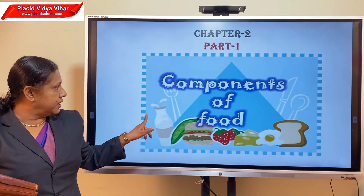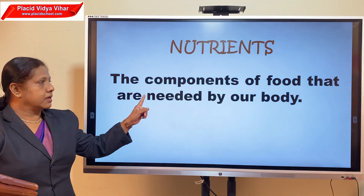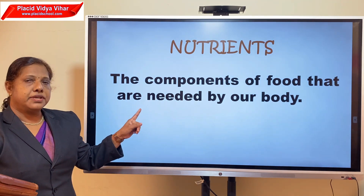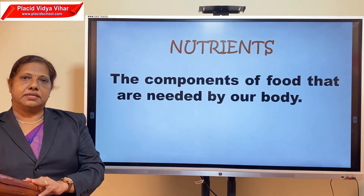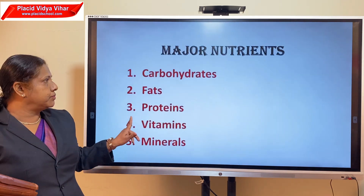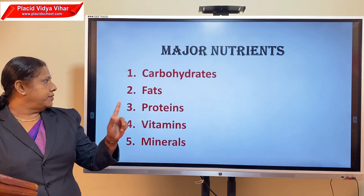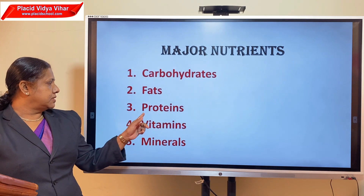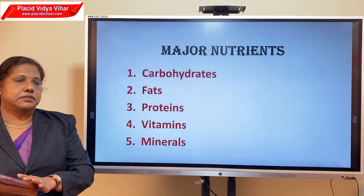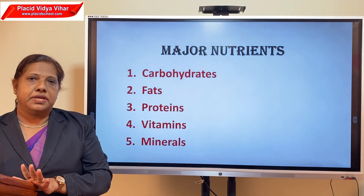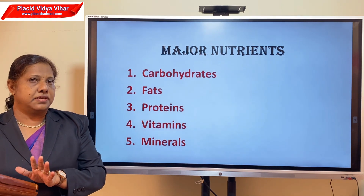So what are nutrients? Nutrients are the components of food that are needed by our body. The five major nutrients in our food are carbohydrates, fats, proteins, vitamins, and minerals.